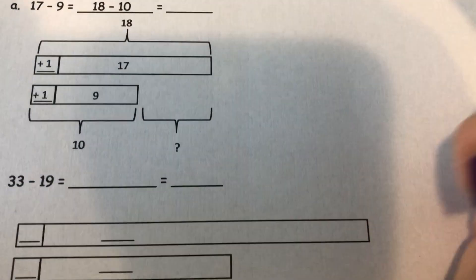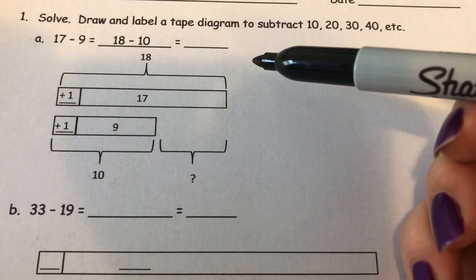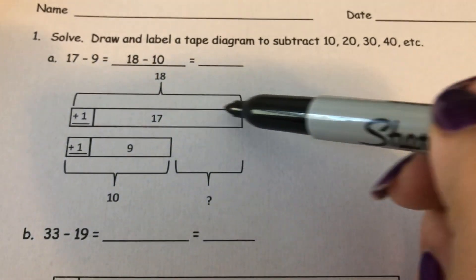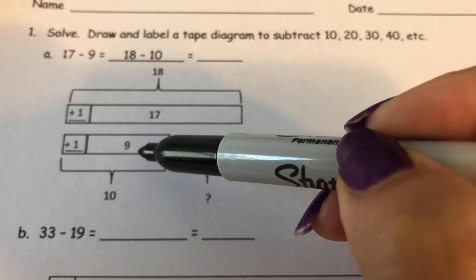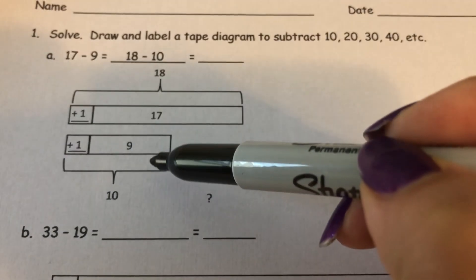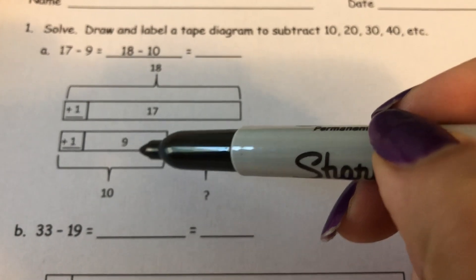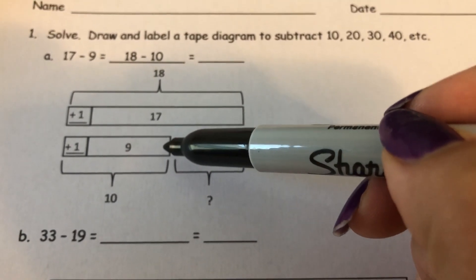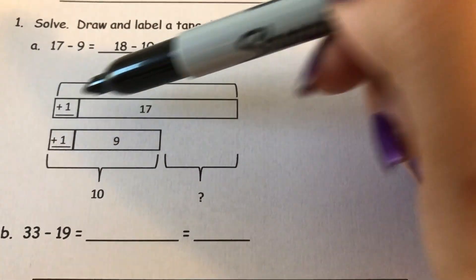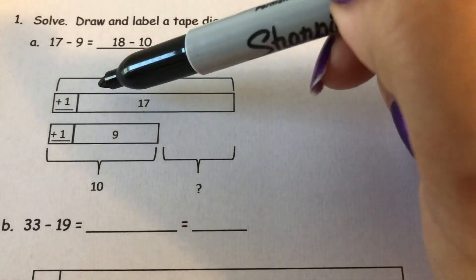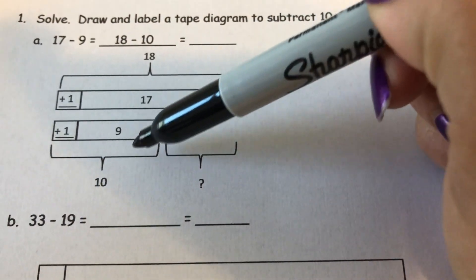So it starts out with a tape diagram, and they've actually filled in this one for you. So on the top has your 17 from right here, and on the bottom tape it's 9 from right there. And this new strategy is that you're going to make a new math problem that's easier to work with in order to solve 17 minus 9. So what they've done is they added 1 to each of those numbers. So 17 plus 1 is 18, and 9 plus 1 is 10.